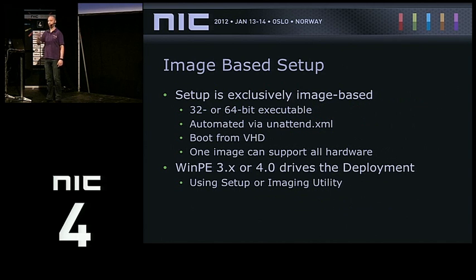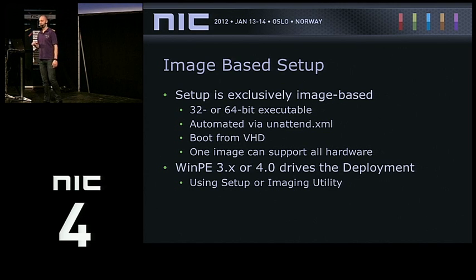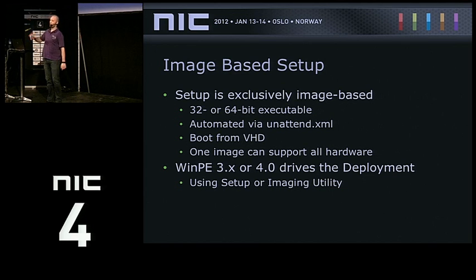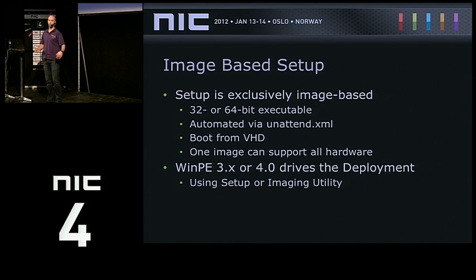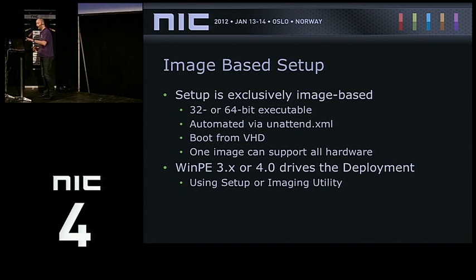In Windows 8 we still have image-based setup — that's the way we do deployments these days. If you download the Windows 8 DVD and open it, you go to the sources folder and find two images: one boot.wim file, which is your WinPE boot image, and the install.wim, which is the Windows 8 image — a sysprepped image by Microsoft, ready for deployment. We don't have to create reference images, though you normally do to save deployment time.